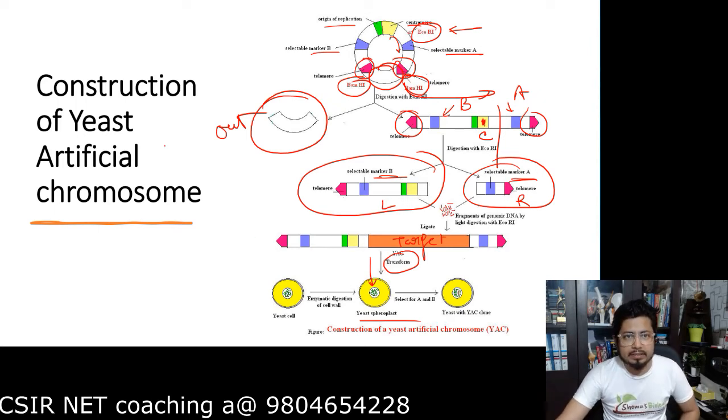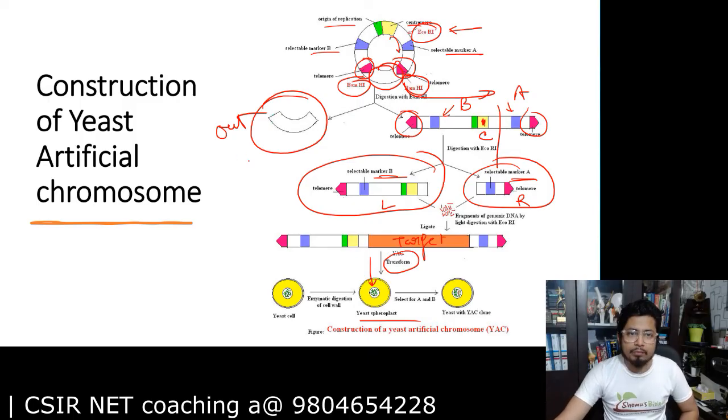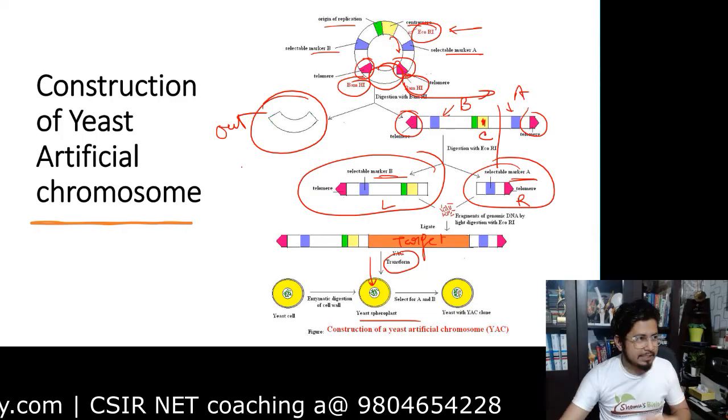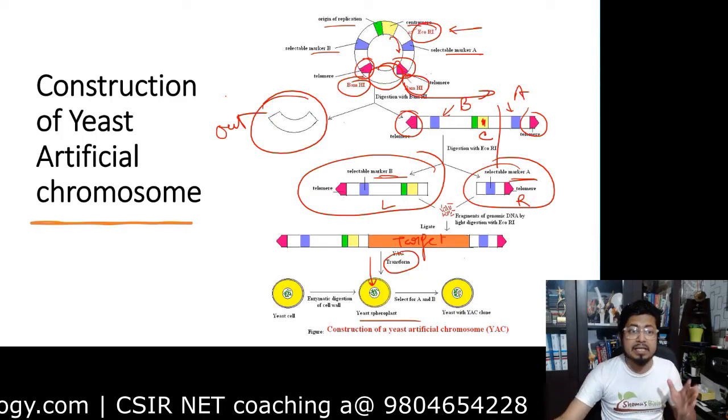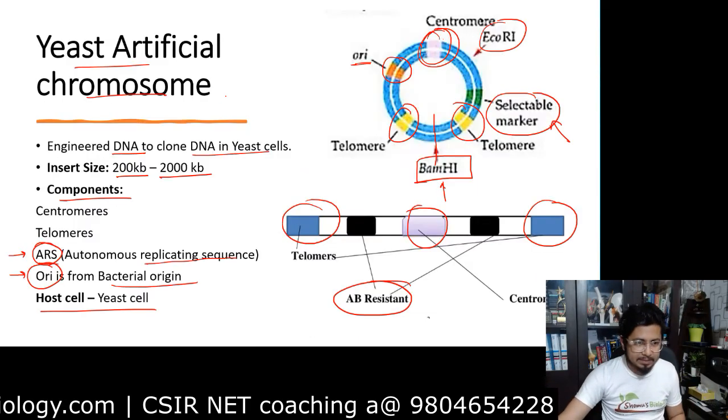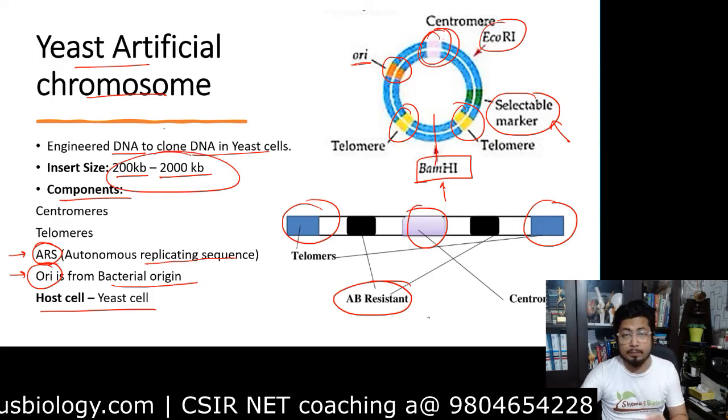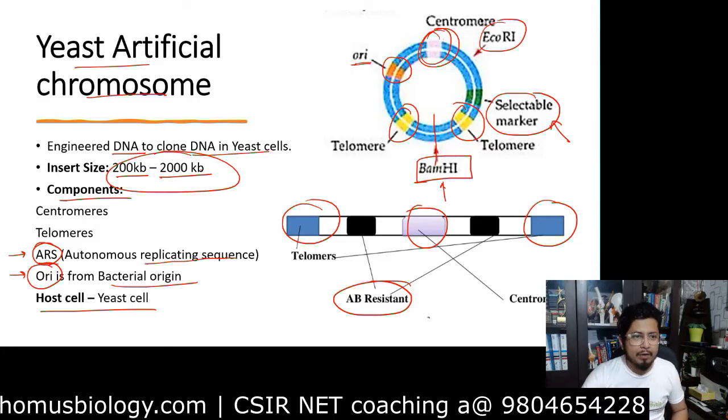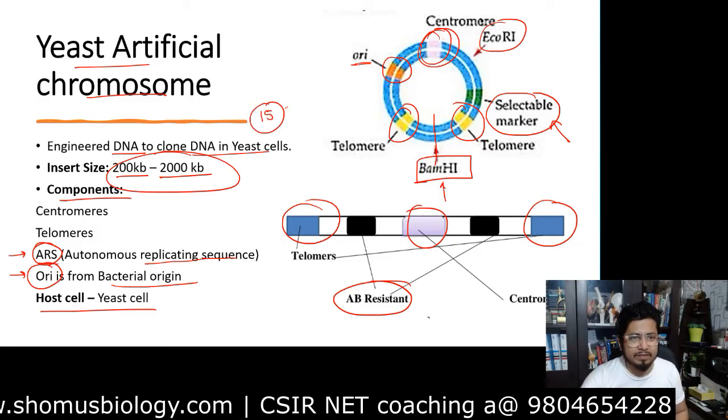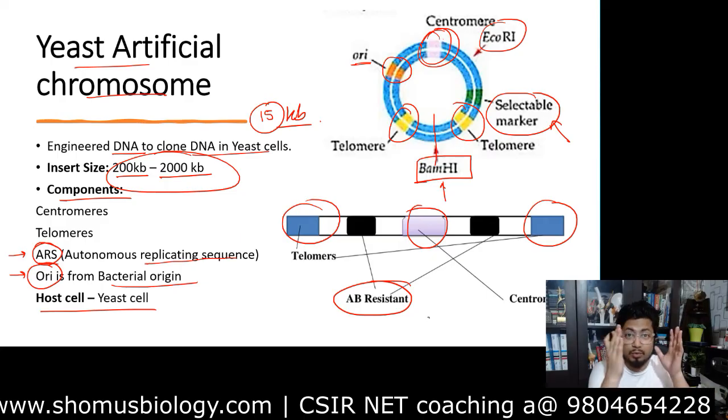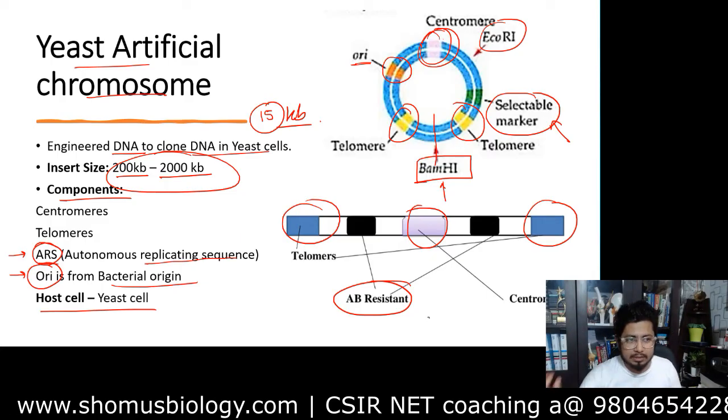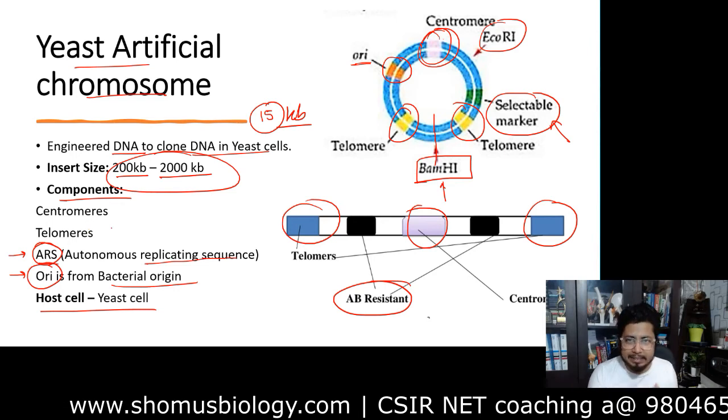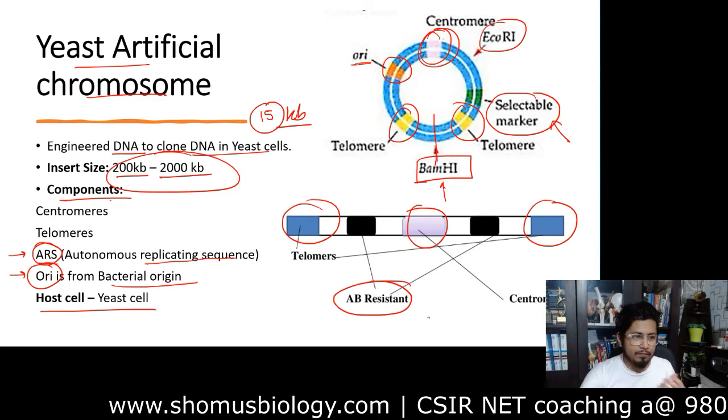That is how we can construct the gene library with the help of Yeast artificial chromosome. We generally use lengthier DNA to be cloned utilizing Yeast artificial chromosome because it has larger insert size. The insert size possibility is 200 kilobases to 2000 kilobases, which is plenty of bigger size. Where a plasmid nearly lasts for 15 kilobases, a Yeast artificial chromosome goes for 200 kilobases to 2000 kilobases. It's a linear form that can be present in linear form as well as in the circular form.